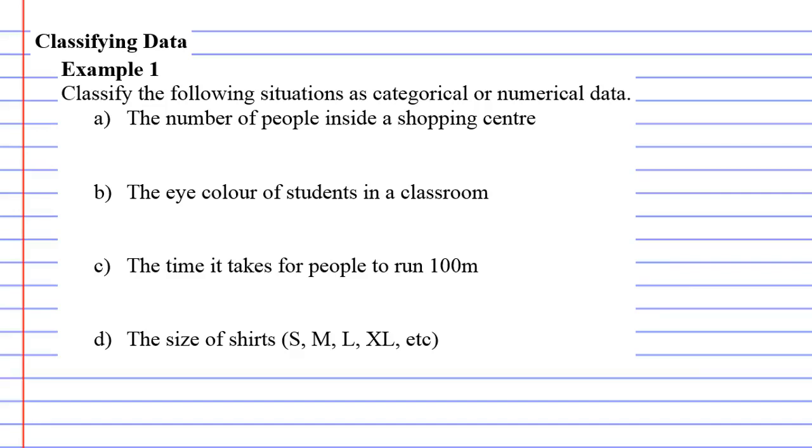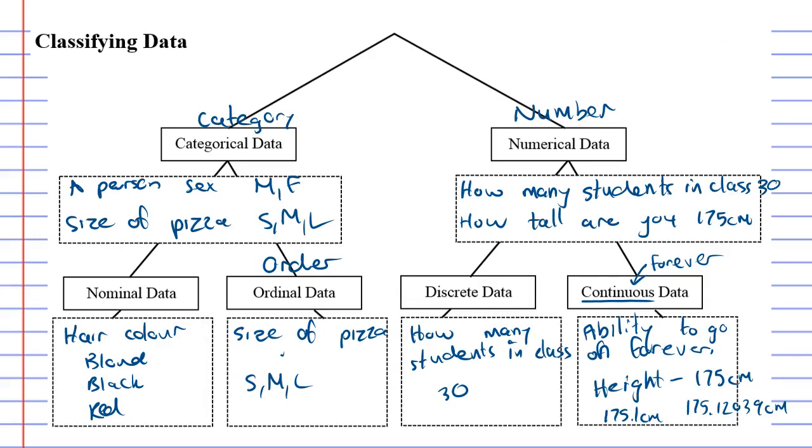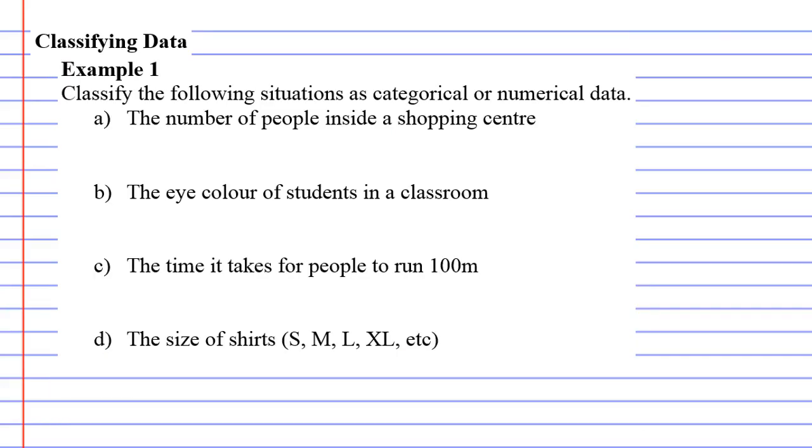Classifying data example one. We need to classify the following situations as categorical or numerical. If we go back to the previous page, these were the first two classifications: numerical is your numbers and categorical is your categories.